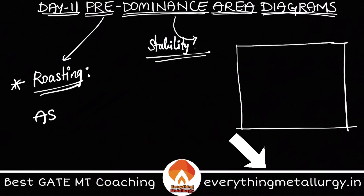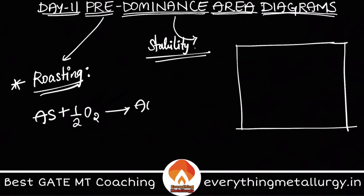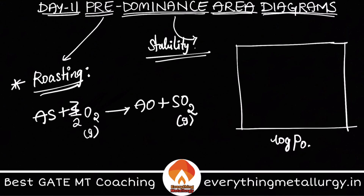Roasting is nothing but oxidation of some ore. Let's say I have some sulfide ore — I am oxidizing it to give AO plus SO₂, something like: AS + 3/2 O₂ → AO + SO₂. In this reaction I want to use the gaseous phases, that is SO₂ and O₂. Using partial pressures, and to compress the graph we usually use log scale.